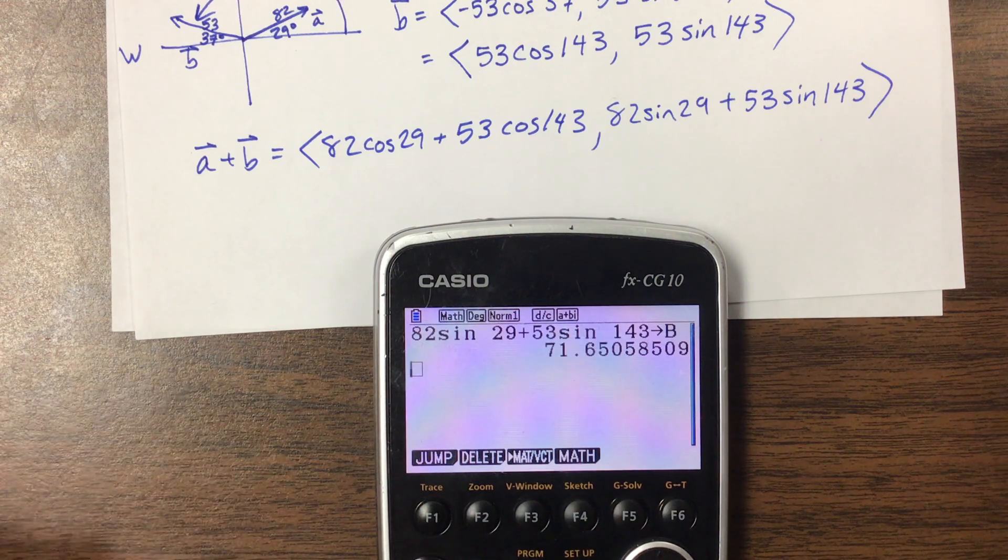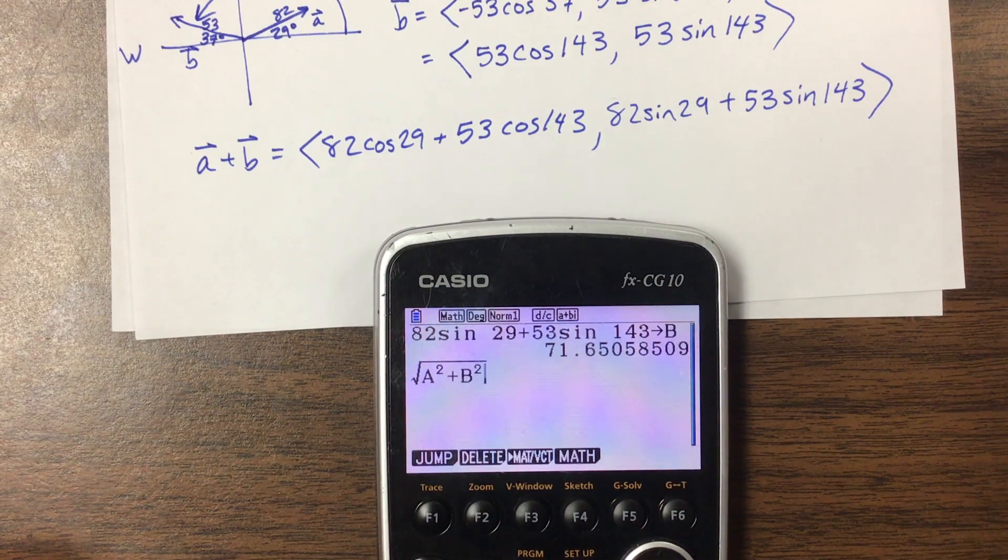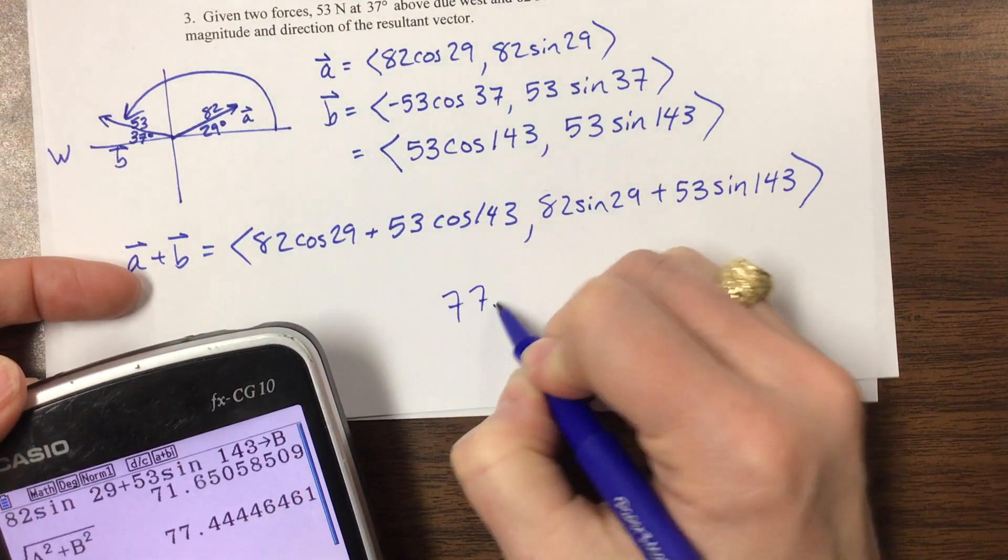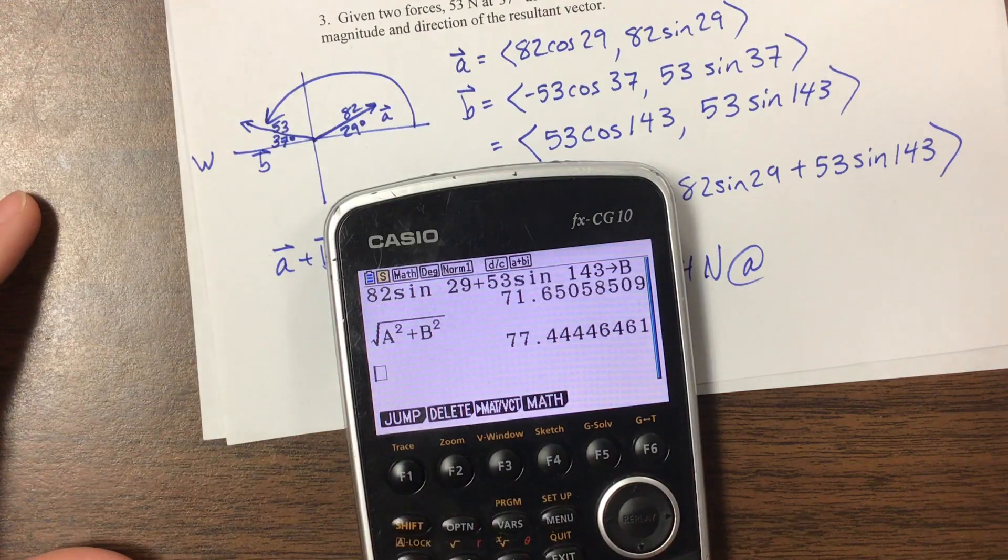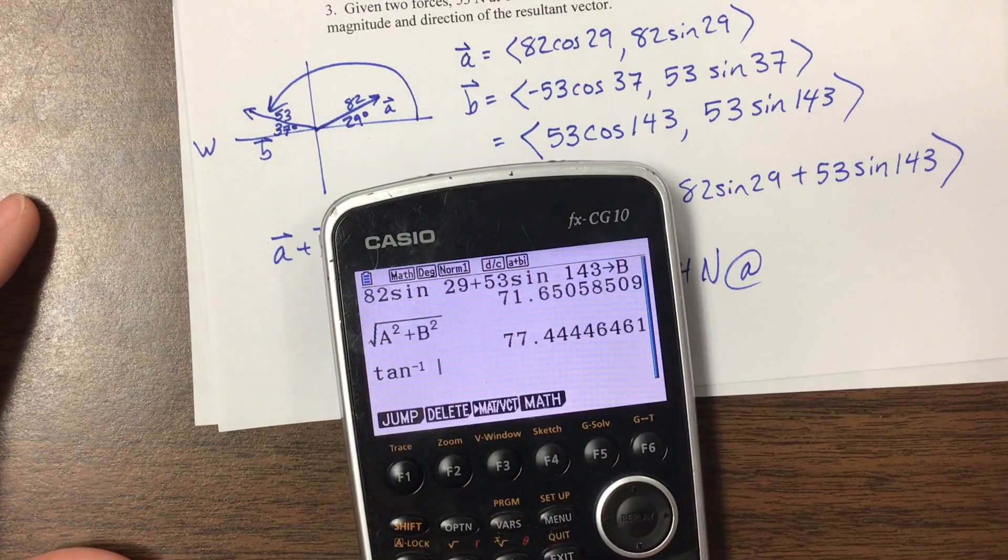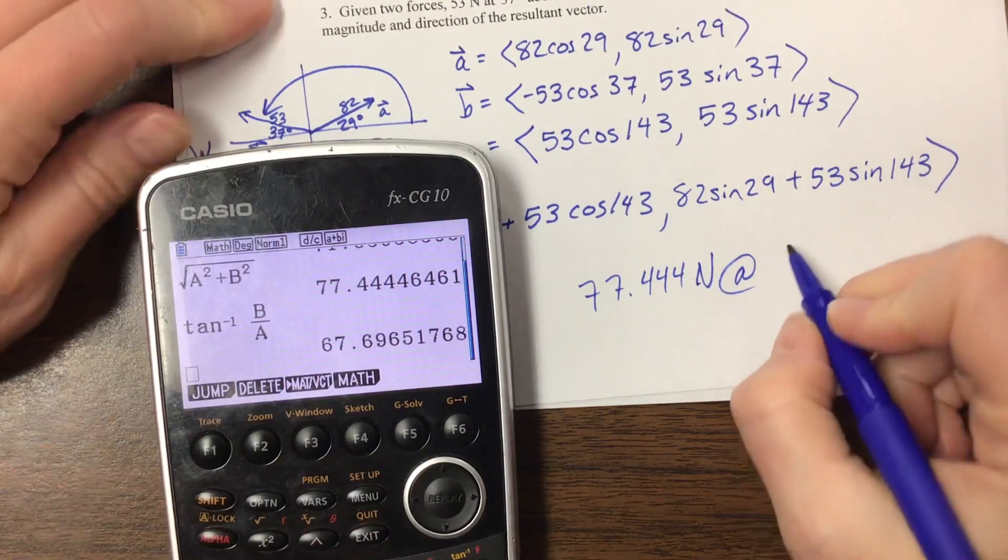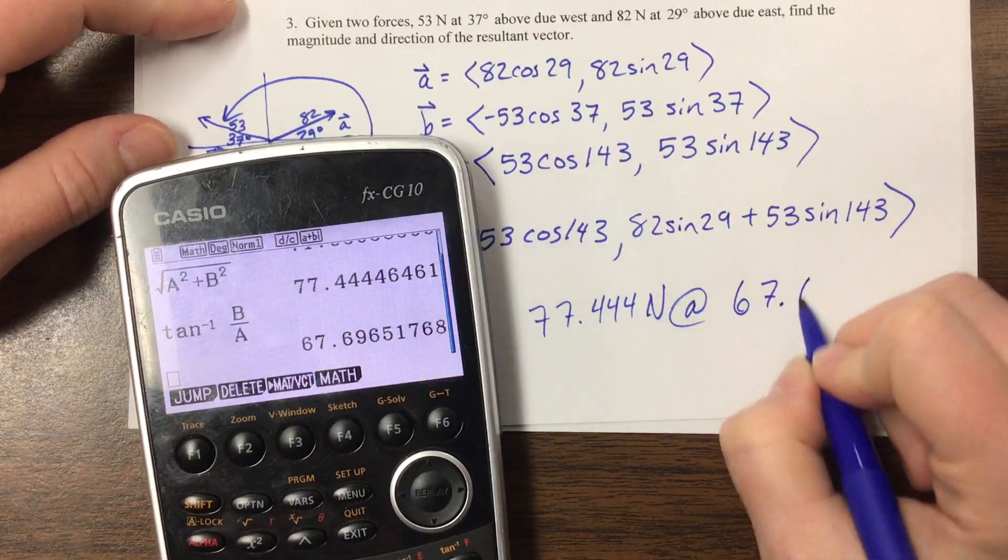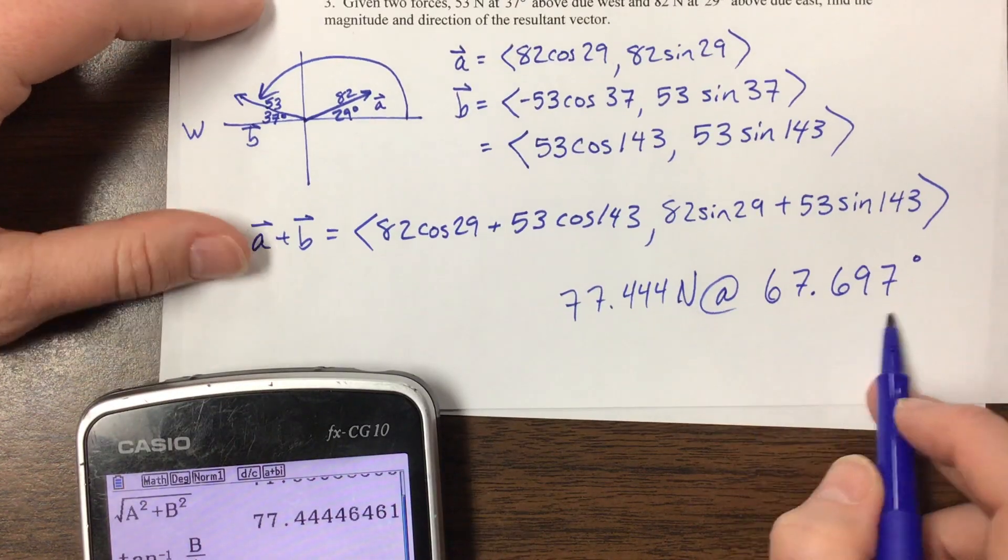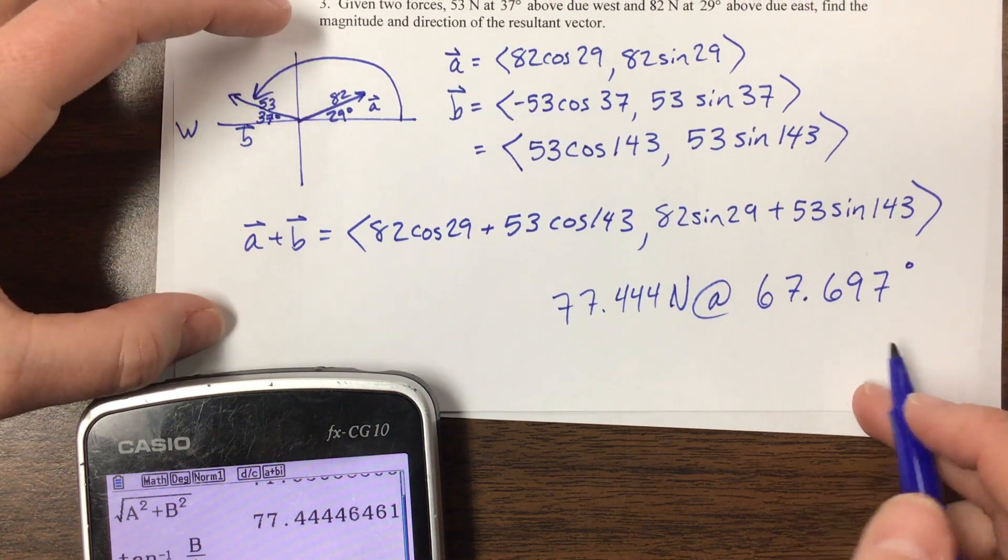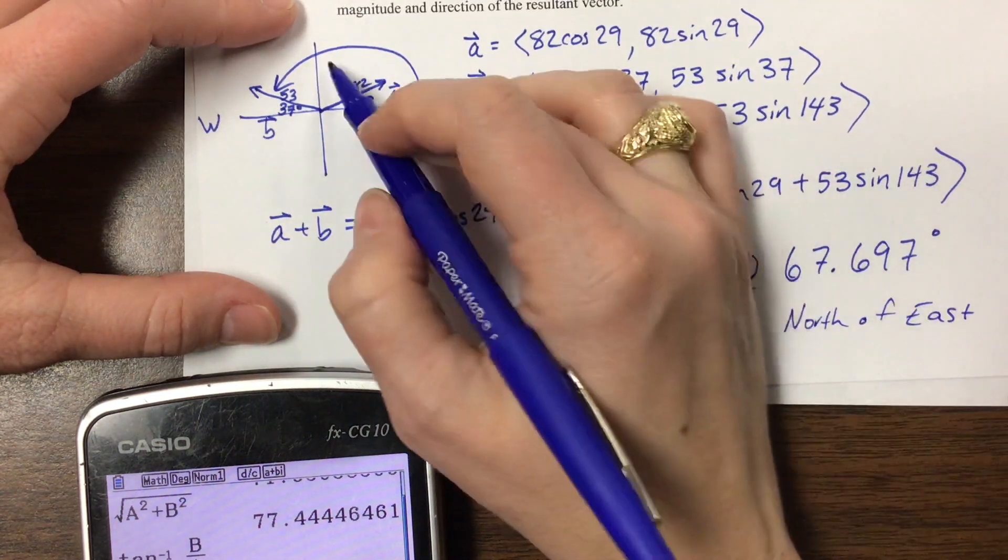And so to find the direction and magnitude, the direction, I take the square root of those things squared. If I'm going too fast, go back and watch the first video. So it's 77.444 newtons at, and then we're going to do inverse tangent of the y value over the x value. So that b over a. And that would be 67.697 degrees. And that's going to be north of east. Because we are in quadrant one and that's kind of what we're looking at.